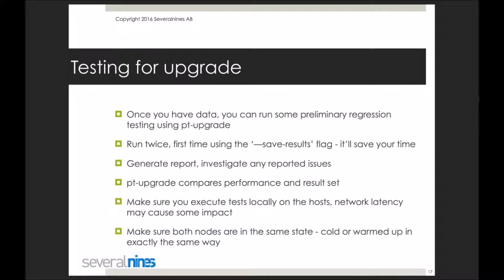Once you have this data, you can start preliminary regression testing using pt-upgrade, which is part of the Percona Toolkit. You run the tool twice: first on the 5.6 host, saving the results as a baseline, and then you reuse those results for subsequent runs on the 5.7 host to compare performance against your 5.6 baseline.